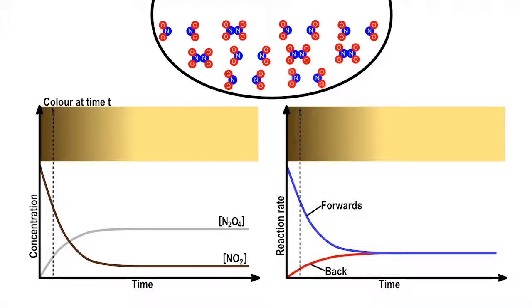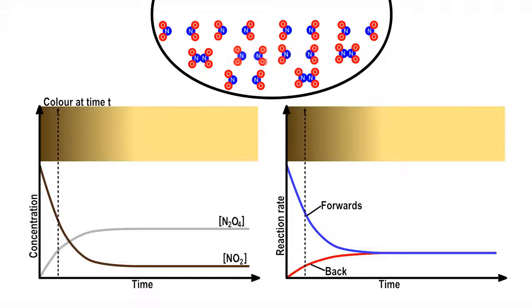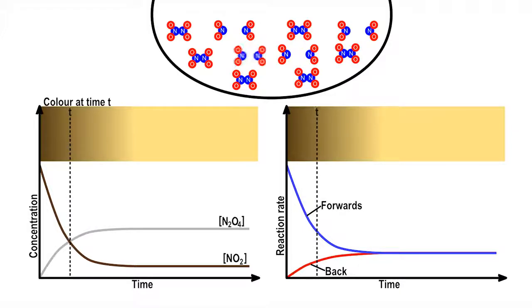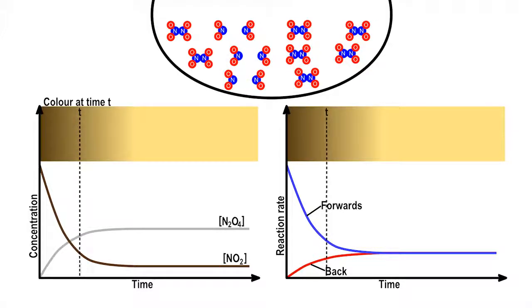As NO2 is converted into N2O4, the concentration of brown NO2 drops, and the concentration of colorless N2O4 rises. This is why the brown color starts to dissipate.